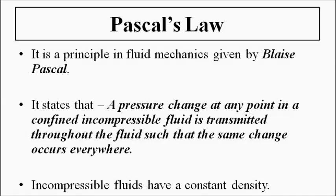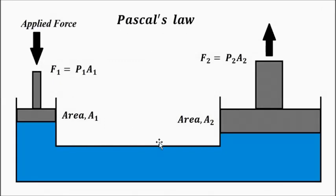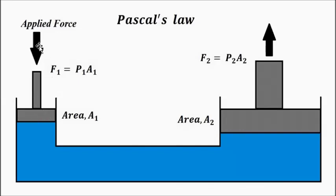Let us understand Pascal's Law with a simple ram and piston arrangement — the basic hydraulic actuation mechanism. We have a closed container, a reservoir containing water, with a piston and ram arrangement. We apply a certain downward force. Depending on the force applied and the surface area A1 of this piston, a certain pressure P1 is generated, where P1 = F1 / A1.